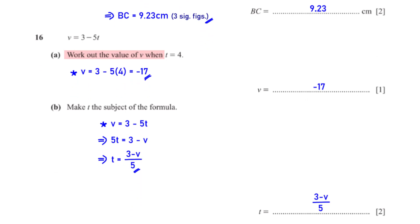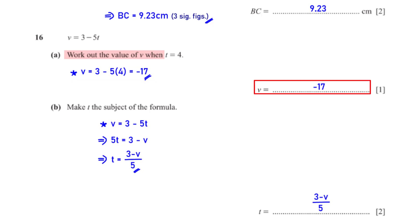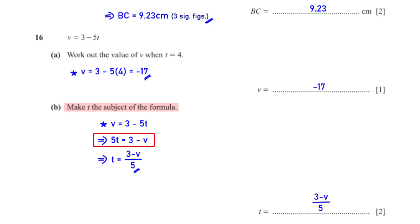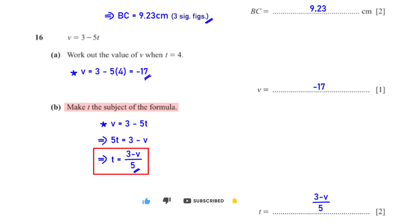Work out the value of v when t equals 4. When we plug in t = 4 into the given equation, we get negative 17. Then, make t the subject of the formula. When we make 5t the subject, we get 5t = 3 − v, and dividing both sides by 5 gives t = (3 − v) / 5.